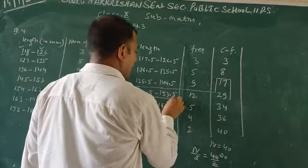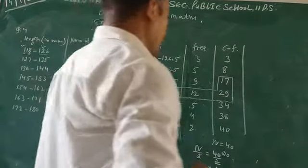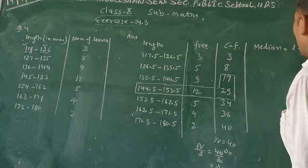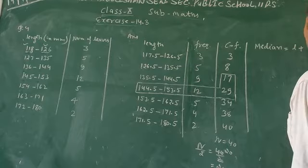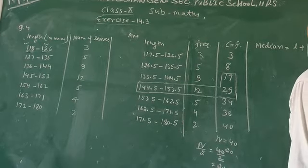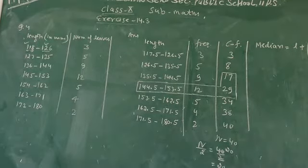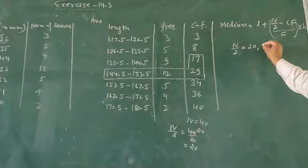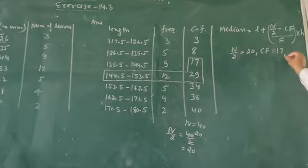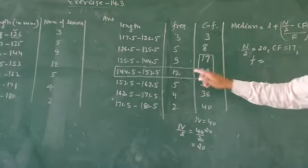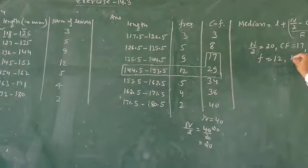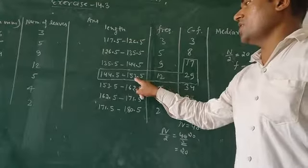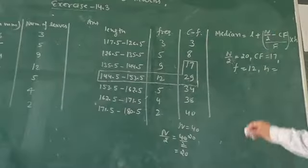So the formula: median equals L plus N by 2 minus CF upon F into H. N by 2 is 40 by 2 equals 20. CF means 17. F means 12. H means the difference, which is 9. 153 minus 144 is 9 difference.